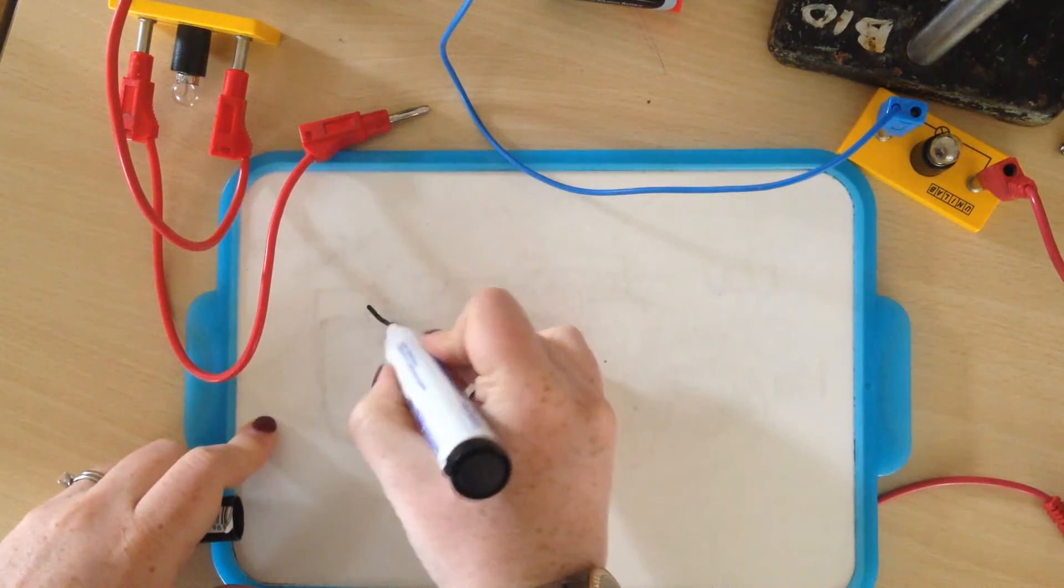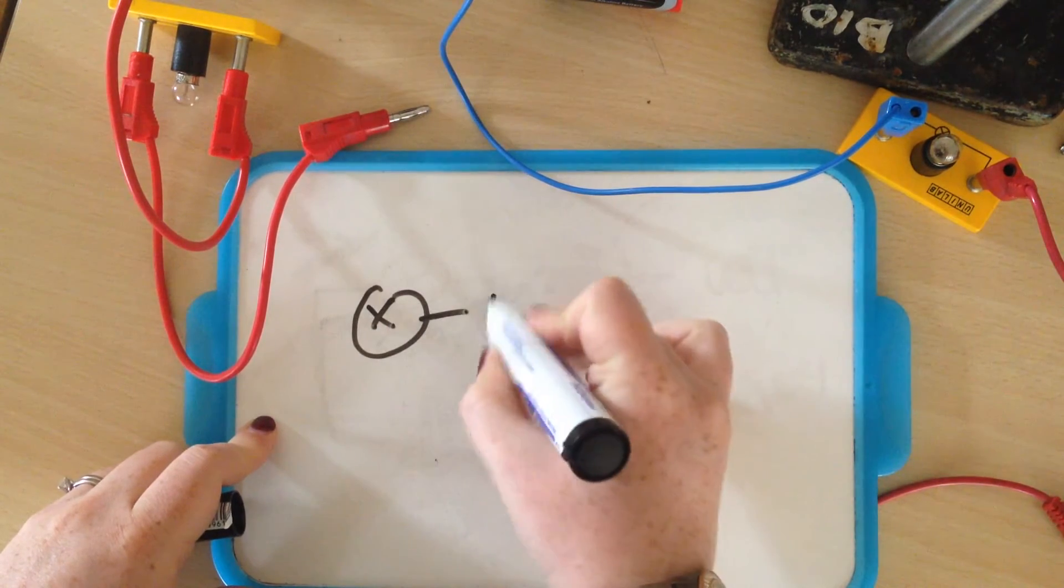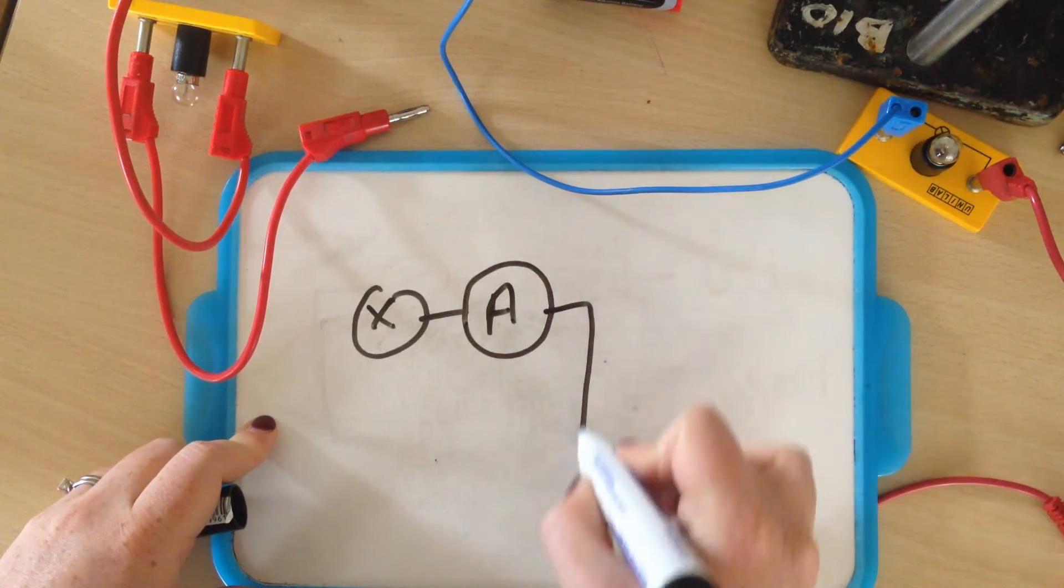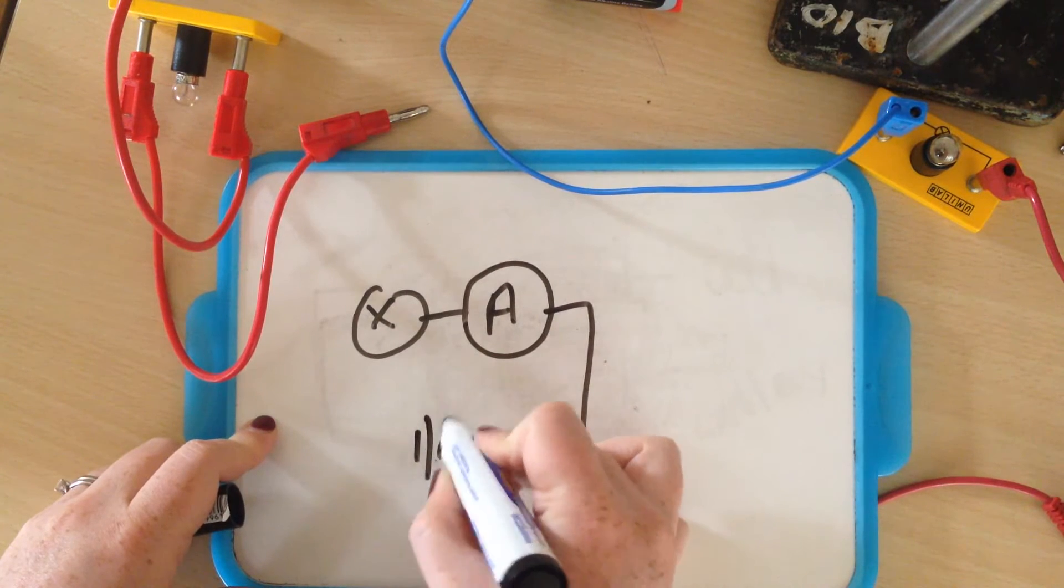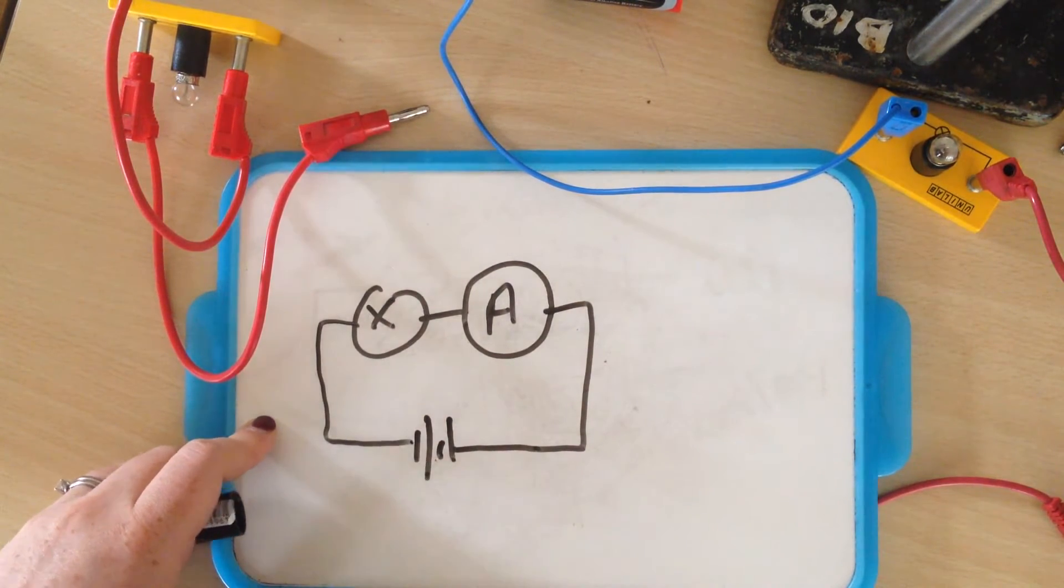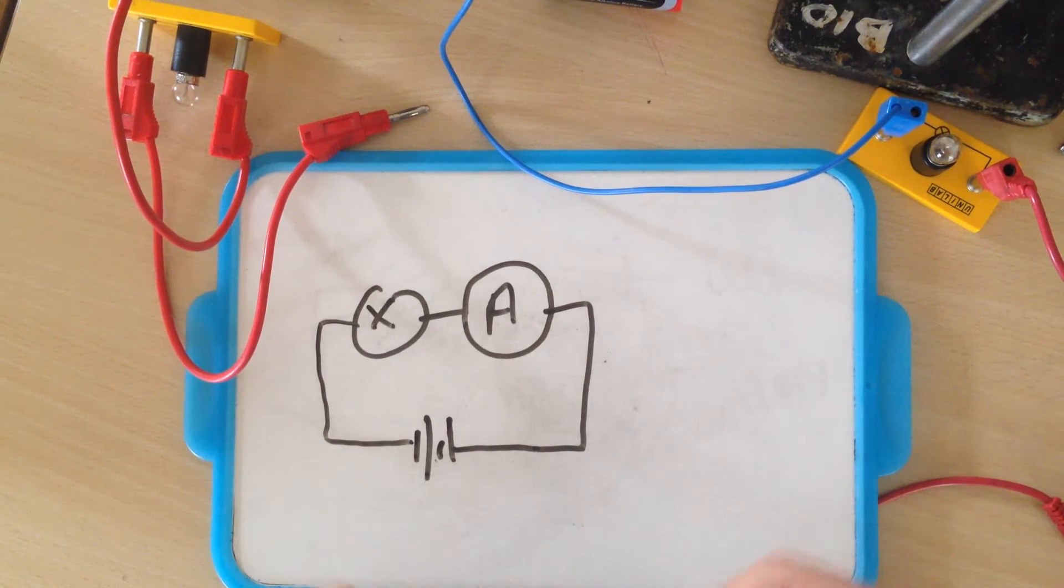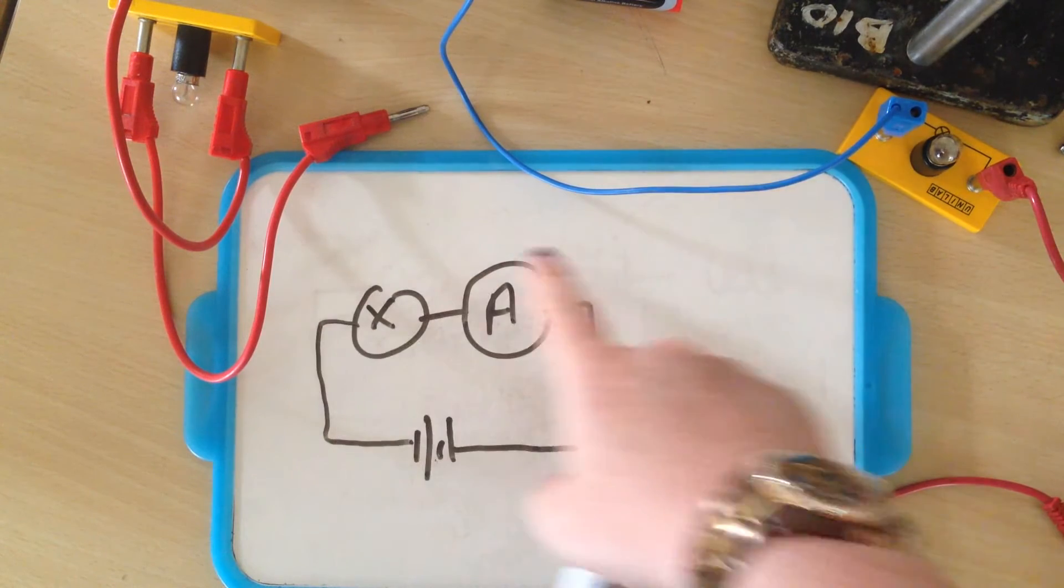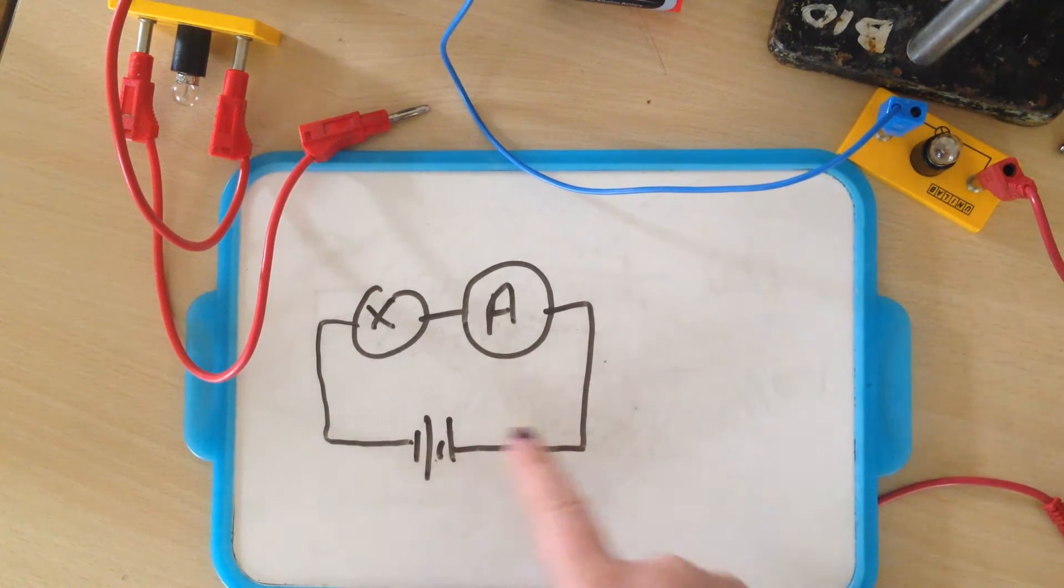So drawing my circuit with a bulb in and then I'm going to have an ammeter in coming down to my battery. Your drawings, I would hope, are a lot neater than this, with of course a pencil and a ruler. Bulb, ammeter, ammeters always have to be in series and my battery.